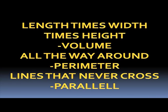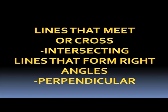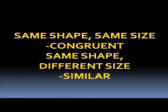All the way around: Perimeter. Lines that never cross: Parallel. Lines that meet or cross: Intersecting. Lines that form right angles: Perpendicular.